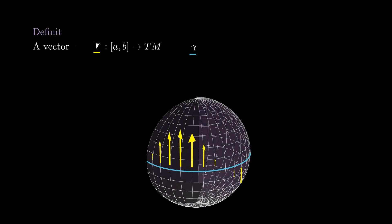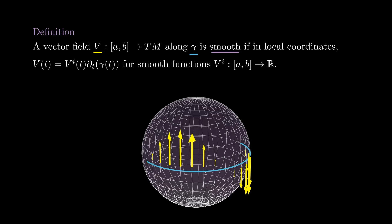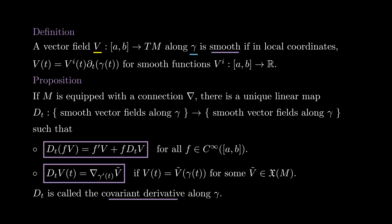Now we go back to the situation at the beginning: if we have a curve gamma and a vector field along gamma, can we take the derivative of this vector field along gamma? This is what we call the covariant derivative. To define its domain, we need to specify when a vector field is smooth — we take local coordinates and say that a vector field along gamma is smooth if its components are smooth functions of time. The covariant derivative is a linear function from vector fields along gamma to vector fields along gamma that satisfies the Leibniz property, and whenever we have a vector field on the manifold, the covariant derivative coincides with Nabla in the direction of gamma-prime. We will prove that the covariant derivative exists and is unique, in the sense that it only depends on the connection that we are using.